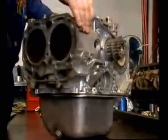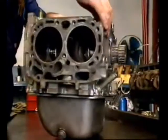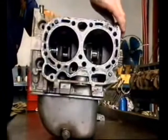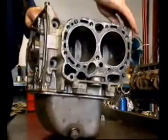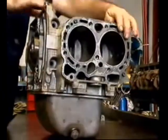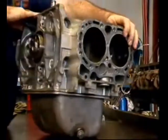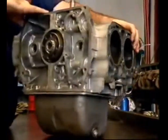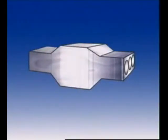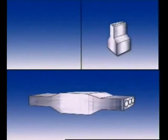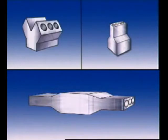Horizontally opposed engines have two banks of cylinders, 180 degrees apart on opposite sides of the crankshaft. This is a useful design when little vertical space is available. It's shorter than a comparable inline engine, but wider than a V-type.